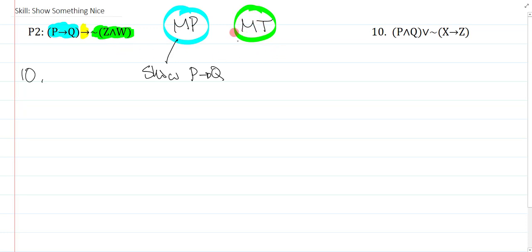Similarly, for the modus tollens, what I really want is the negation of the negation of Z and W. But I'm not going to show that because the double negation is really awkward, so I really know that this is perfectly equivalent to Z and W. So if I want Z and W, I could actually show Z and W.